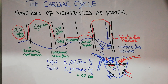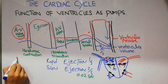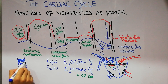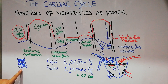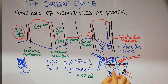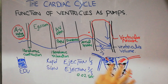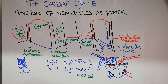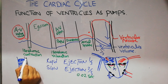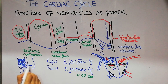During the contraction process of the ventricles, the amount of blood present at the start of contraction is known as end diastolic volume. The ventricle was relaxed, the AV valves were open, and the aortic and pulmonary valves were closed, so blood accumulated in the ventricles. When the ventricles contract, a large amount of blood goes out, but a small amount remains — this remaining blood is known as end systolic volume.